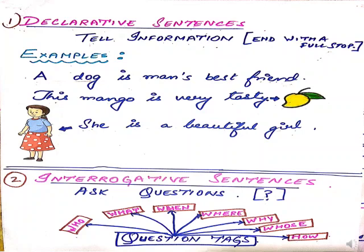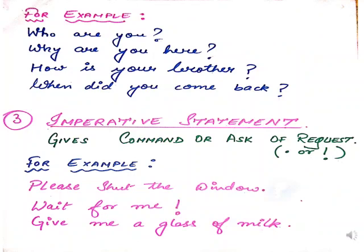Interrogative sentences use the five WH questions — WH words that is: who, what, when, where, why, and whose. Plus the H word, which is 'how.' These are the question words. Some examples are: 'Who are you?', 'Why are you there?', 'How is your brother?', 'When did you come back?' These all are examples of interrogative sentences.